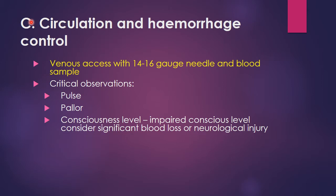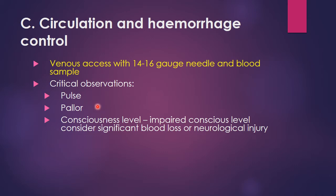We now come to C — circulation and hemorrhage control. Venous access is established with a 14 to 16 gauge wide-bore needle and blood sample is taken for grouping and cross-match. These wide-bore cannulas are almost always used in polytrauma cases because these patients may need massive rapid blood and fluid transfusions — small needles do not allow rapid crystalloid or colloid delivery.